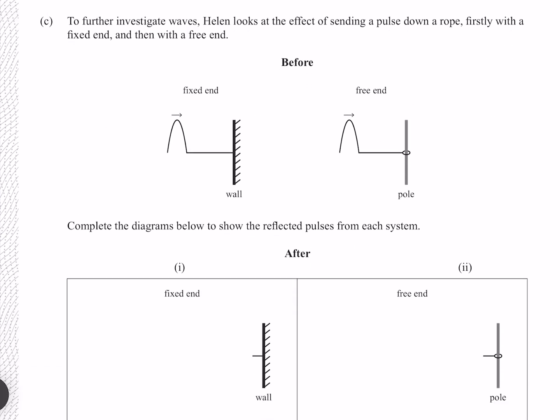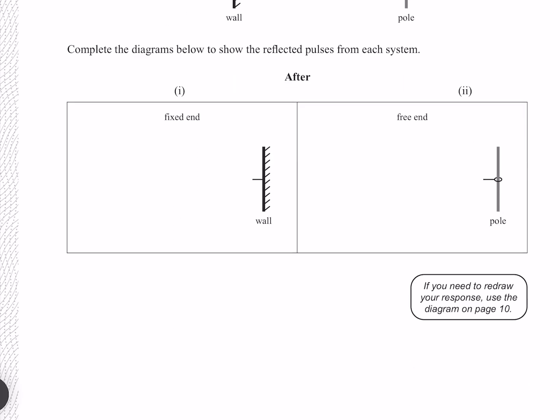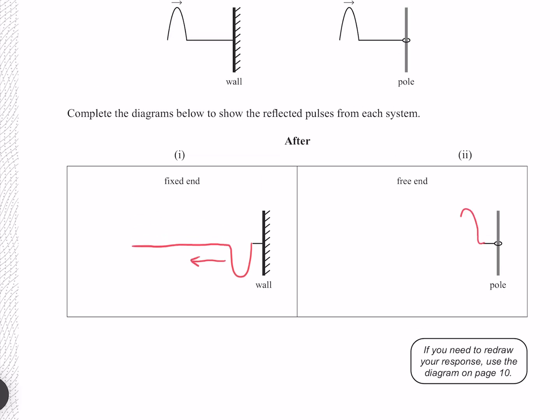To further investigate waves, Helen looks at the effect of sending a pulse down a rope, firstly with a fixed end and then with a free end. Complete the diagrams below to show the reflected pulses from each system. Our fixed end reflection is going to be upside down, whereas our free end is going to be upright. The wavelength is going to be unchanged in both cases.